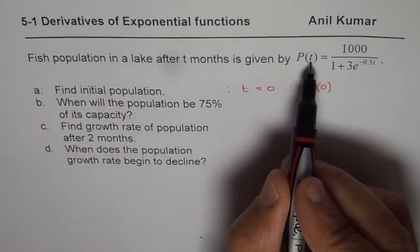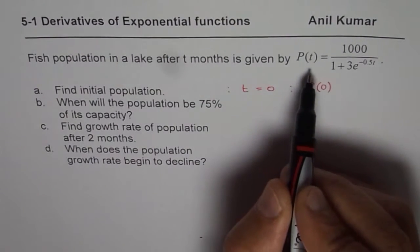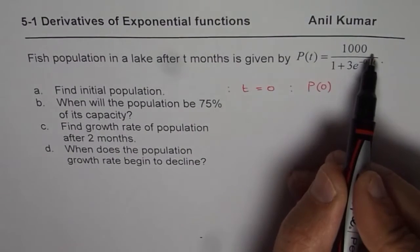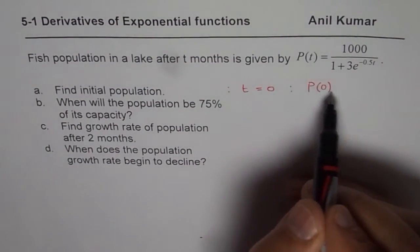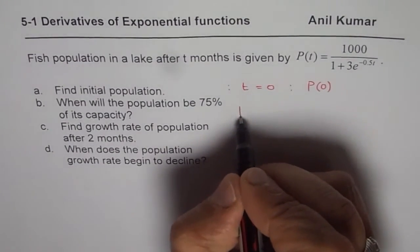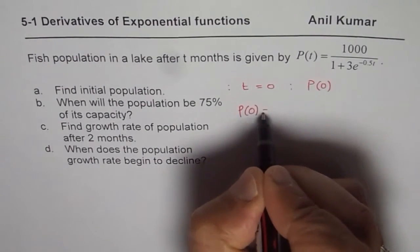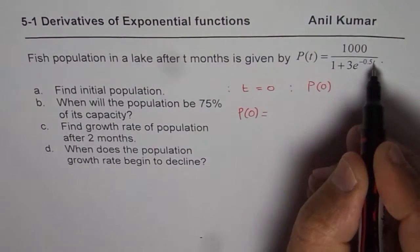So to find initial population, I have to substitute t as 0. Do not write 1000 just because you see a number there. Try to solve and get the answer. So we say P(0), that is initial population is when t is 0.